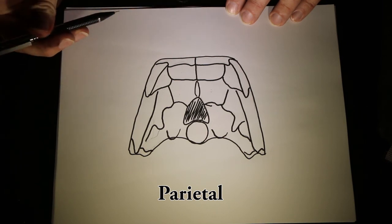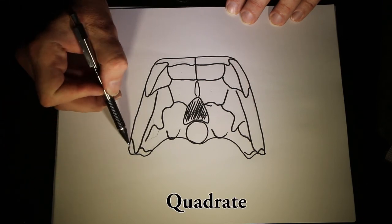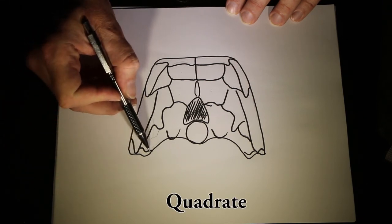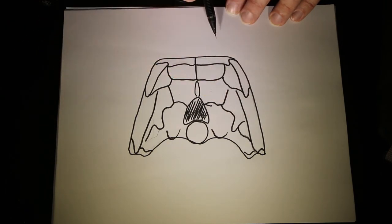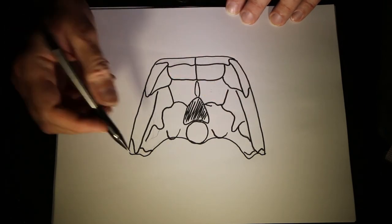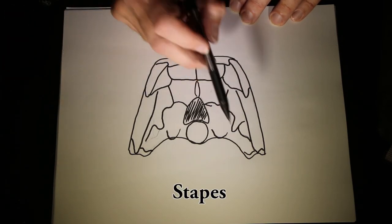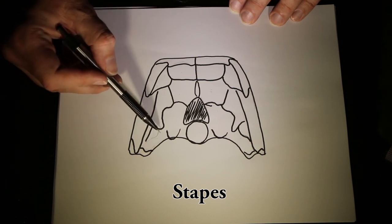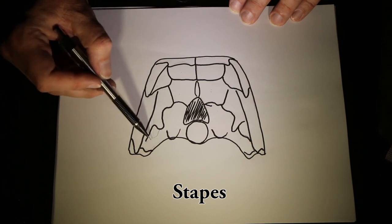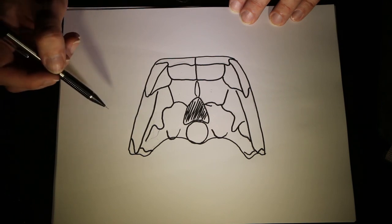Also visible in this view is the quadrate — the quadrate is the articulating bone with the lower jaw, and we see that on both sides. We can also see a bone down here called the stapes. The stapes is the hyomandibular that has been incorporated into the back of the braincase for hearing.